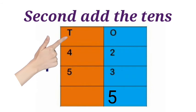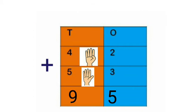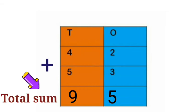Next we add the 10's place: 4 plus 5. Put 4 on the fingers, next 5 on the fingers. Count on from 4: 5, 6, 7, 8, 9. So the answer is 9. So the total sum is 95.